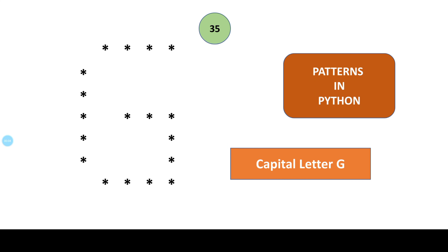Hello everyone and welcome back to Python lecture. This is another video in which we are going to see how we can draw capital letter G using asterisks in Python. Without wasting time, let us move to the explanation of the code.